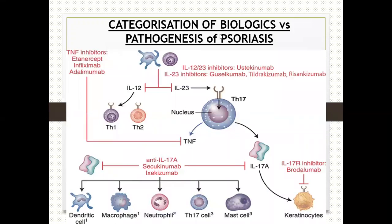This pathway diagram shows antigen-presenting cells interacting with naive T cells. As a result of this interaction, the antigen-presenting cells secrete two cytokines: interleukin-12 and interleukin-23. Interleukin-12 results in proliferation and secretion of activated TH1 and TC1 cells, which then migrate to the dermis and release TNF-α, interferon-gamma, and other interleukins (IL-6, IL-1), resulting in keratinocyte proliferation.